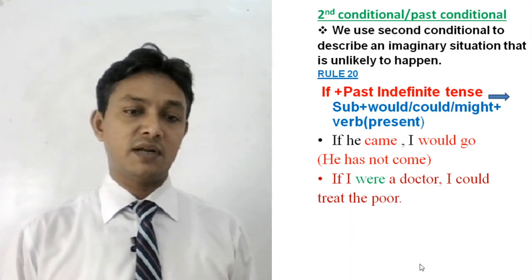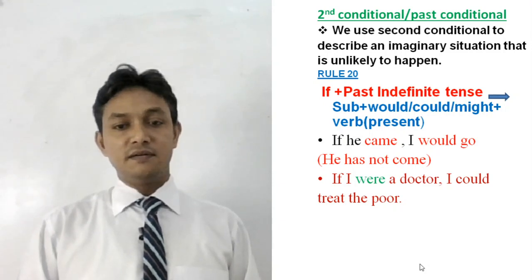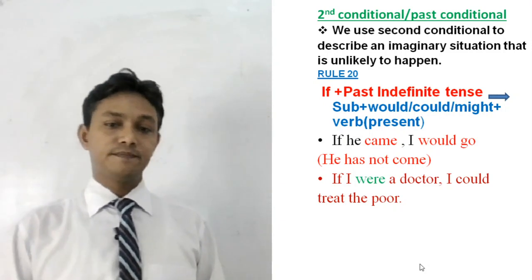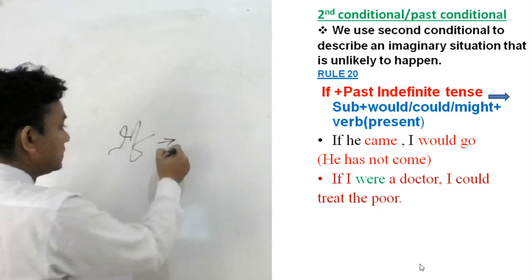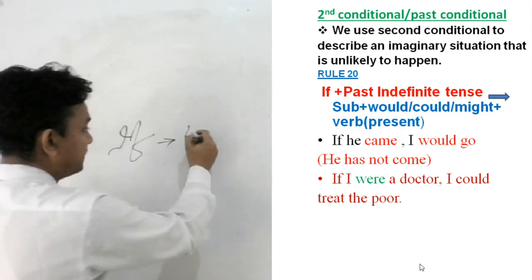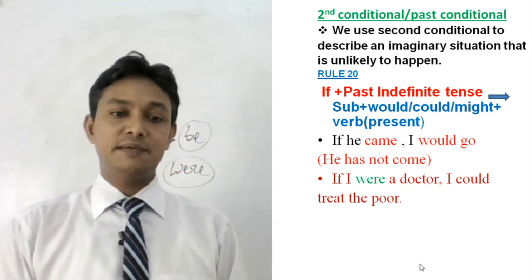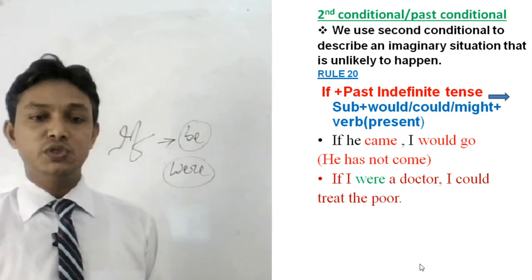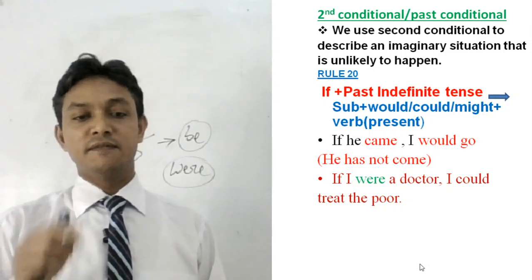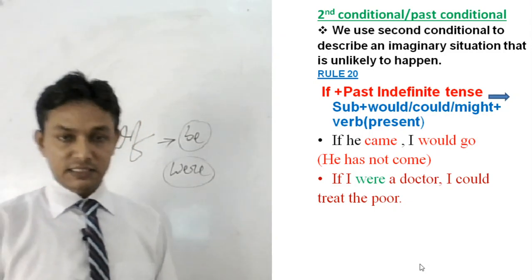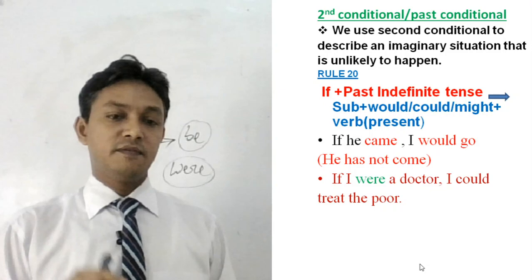One very important point to notice in second conditional: after 'if', the be verb will always be 'were' when describing an imaginary or unreal situation. That means for any subject — whether it is I, we, he, she, they — we use the be verb 'were'. In second conditional, if we express any unreal or imaginary situation, we use 'were' for any subject.